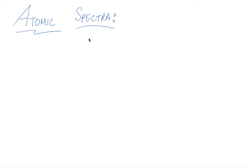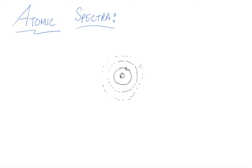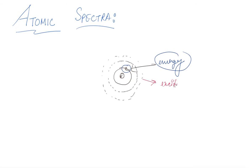In this video we will be talking about atomic spectra. The basic idea is that this is your atom, this is your nucleus, and this is your electron revolving around the nucleus. There are different possible orbits for this electron. If you supply energy, excitation occurs — the electron gains energy and moves to a higher orbit.